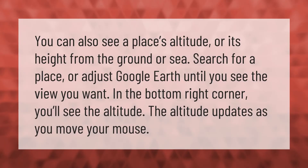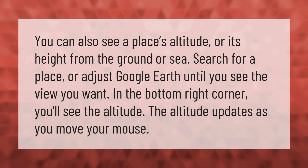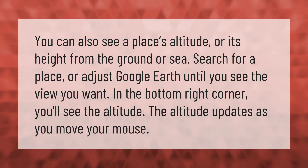You can also see a place's altitude — its height from the ground or sea level — in Google Earth. Search for a place or adjust Google Earth until you see the view you want. In the bottom right corner you'll see the altitude, which updates as you move your mouse.